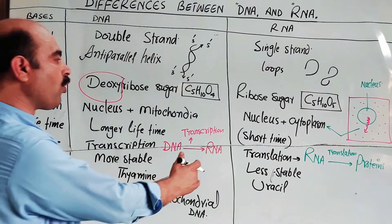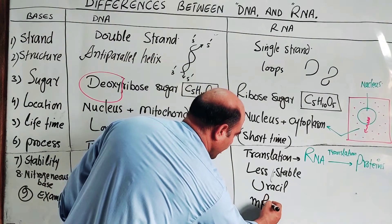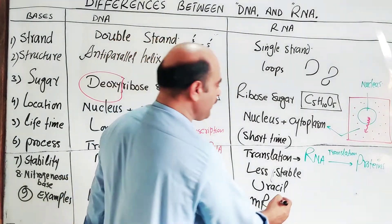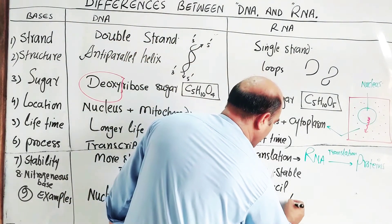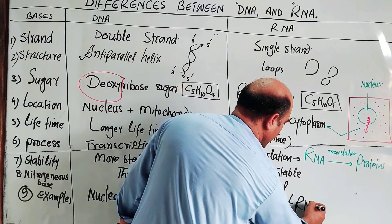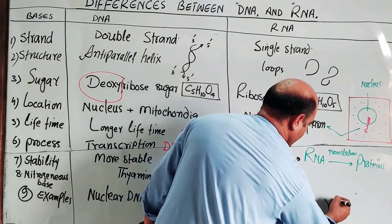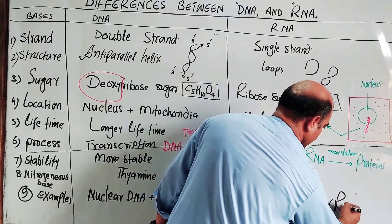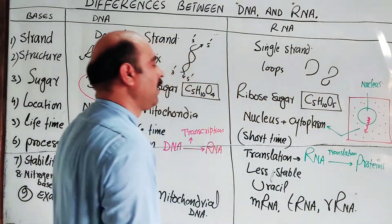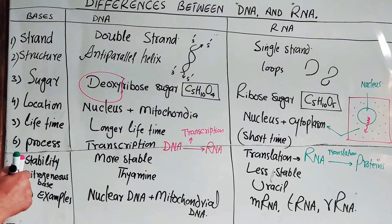The types of RNA include messenger RNA (mRNA), transfer RNA (tRNA), and ribosomal RNA (rRNA). These are the three main types of RNA found in the cell.